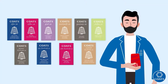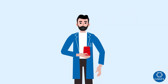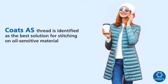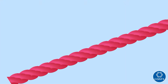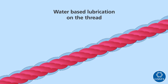Coates AS range of threads has lived up to its reputation of impeccable quality in threads, and I'm going to tell you why I say this. Standing the test of time, Coates AS thread is identified as the best available solution for stitching on oil-sensitive material. Due to the emulsion lubrication, which is a water-based lubrication on the thread, it leaves no oil stains on fabrics post-stitching.